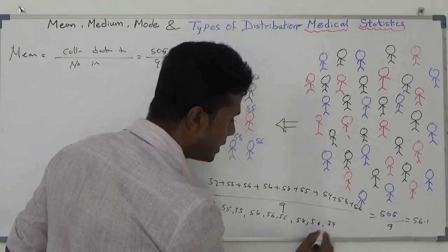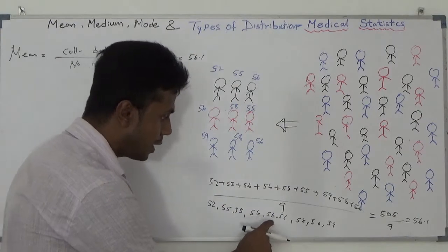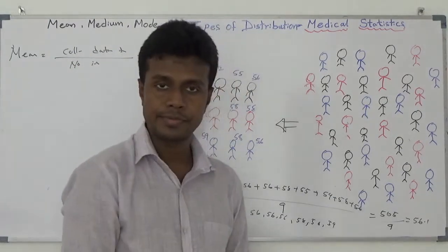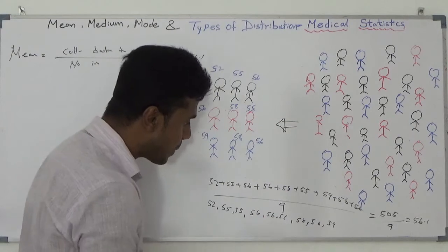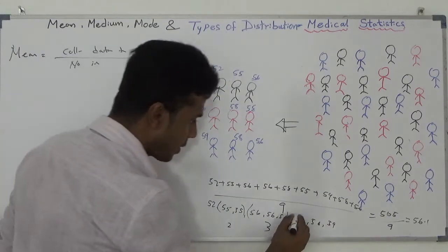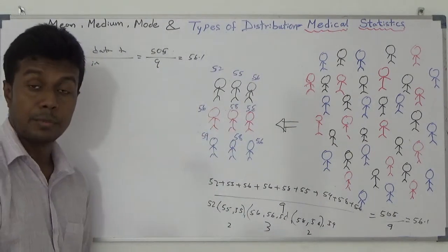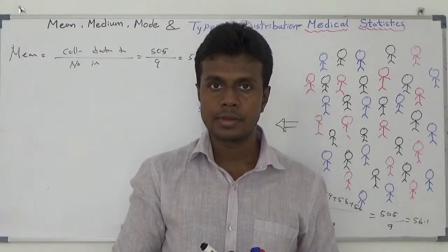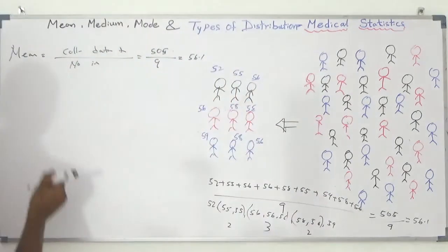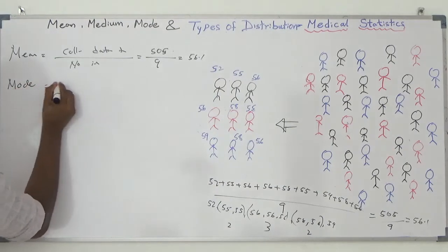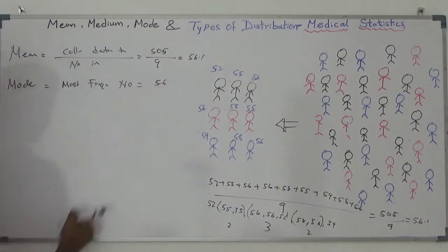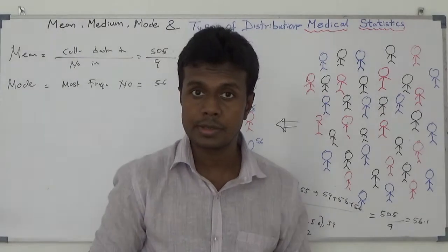Then 59 appears once — all 9 individuals accounted for. Once I put this in chronological order, I can see the most frequently appearing number is 56 — it appears three times. 52 appears once, 55 appears twice, 58 appears twice. The most frequently appearing number in your sample is called the mode. Here, the mode is 56.